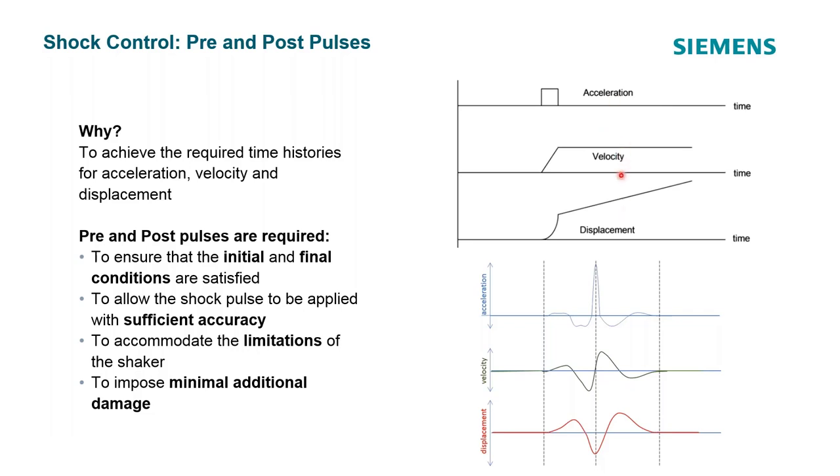This would be especially troubling if we did multiple shots or multiple pulses, because the velocity and displacement values would just skyrocket and be much too high for our shaker limitations.